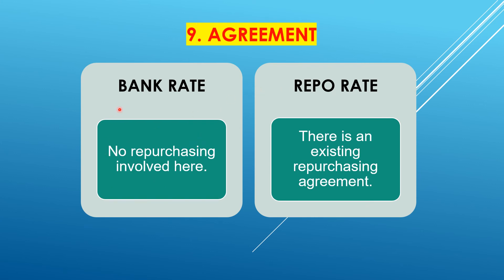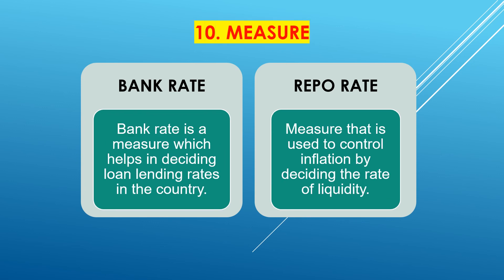Next point: in bank rate, there is no pre-purchasing involved. In repo rate, there is an existing repurchasing agreement — you have to sign that agreement beforehand for the repurchase. Bank rate is a measure which helps in deciding loan lending rates in the country. Repo rate is a measure used to control inflation by deciding the rate of liquidity, and it is an actual tool to control inflation and decide the rate of liquidity.